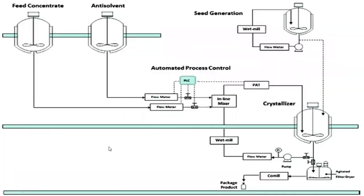For automated process control, an anti-solvent and feed concentrate are combined, with a PLC controlling flow meters and inline mixers. The mixture goes to the crystallizers, where flow meters and a wet mill are also used. Seed generation is handled in another set of crystallizers.